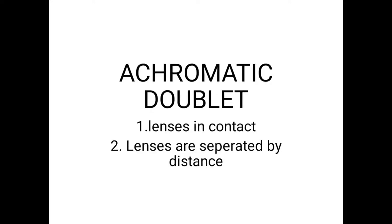Chromatic aberration is minimized using separate lenses. Two lenses combined form an achromatic doublet. An achromatic doublet has two cases: Number 1 is lenses in contact, and the second case is lenses separated by a distance. Chromatic aberration occurs with a chromatic source. Different wavelengths from a white source form different images — this defect is chromatic aberration. Achromatism uses combined lenses to address this.